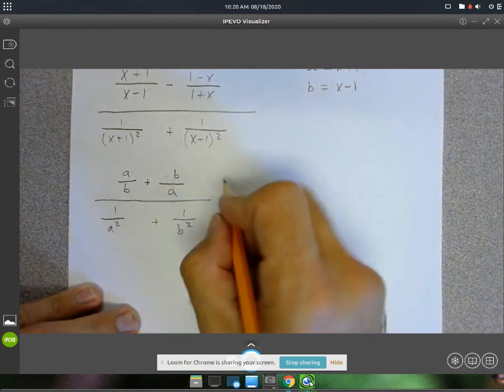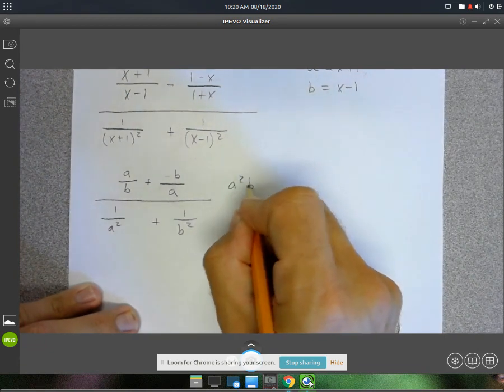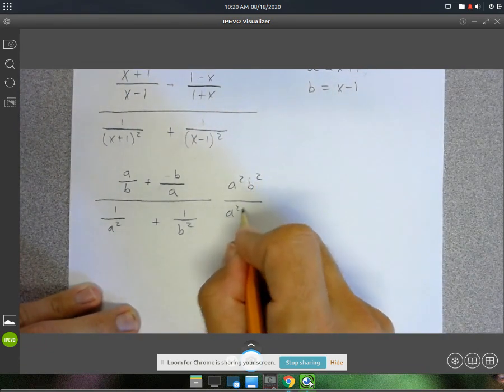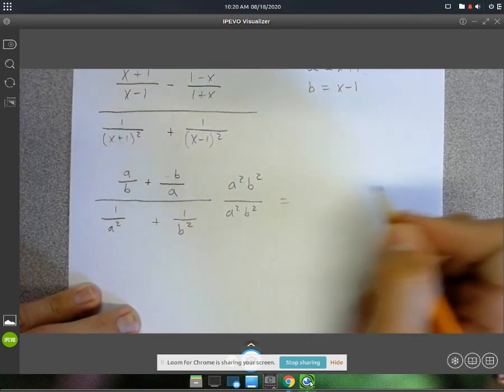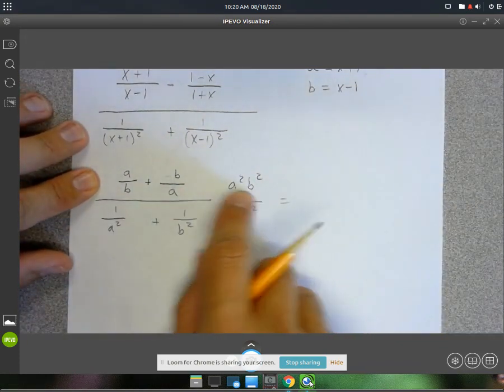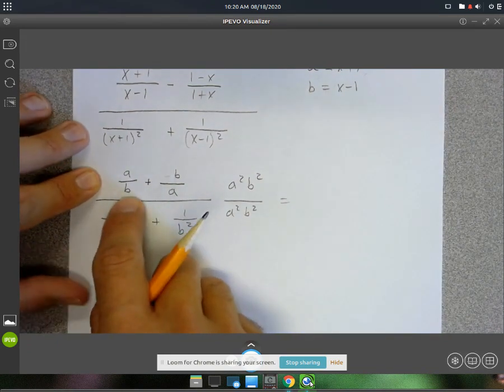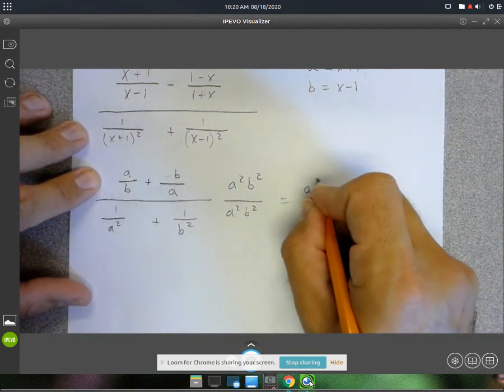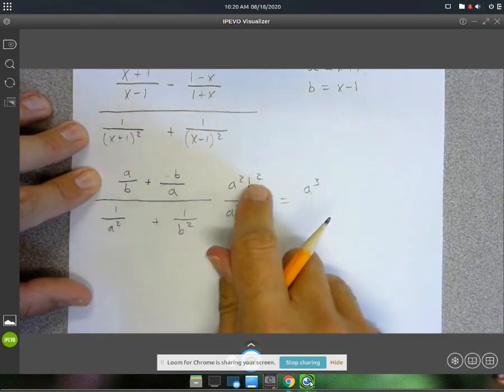So a squared, b squared is our LCM. For a squared, b squared times this, we're going to have a to the third power. And then one of those b's will cancel.